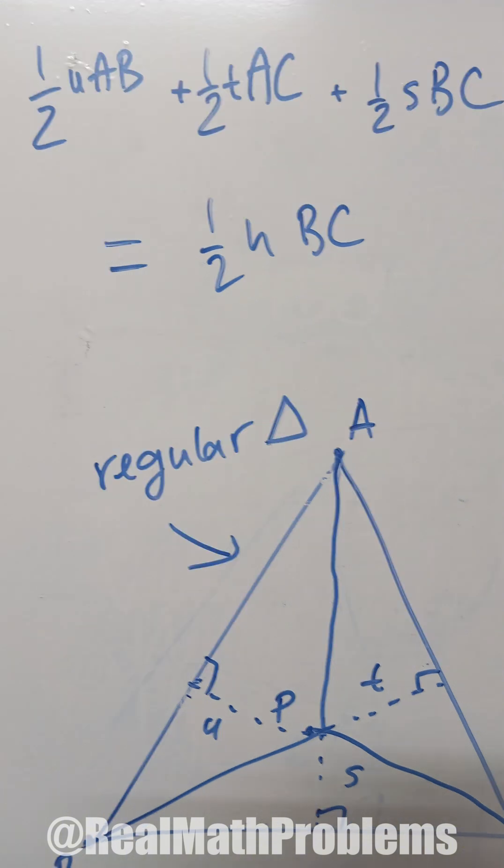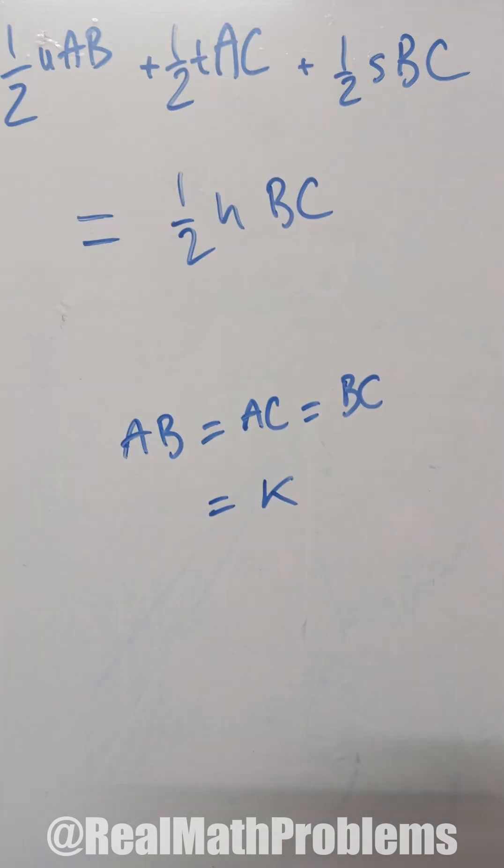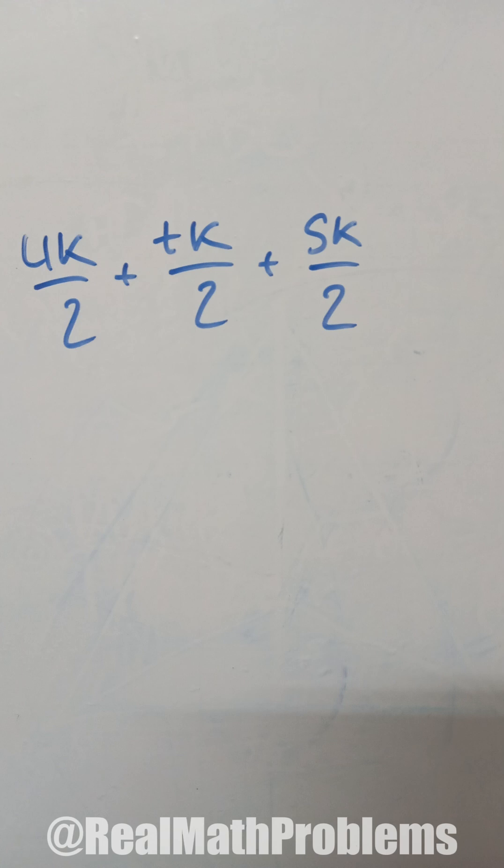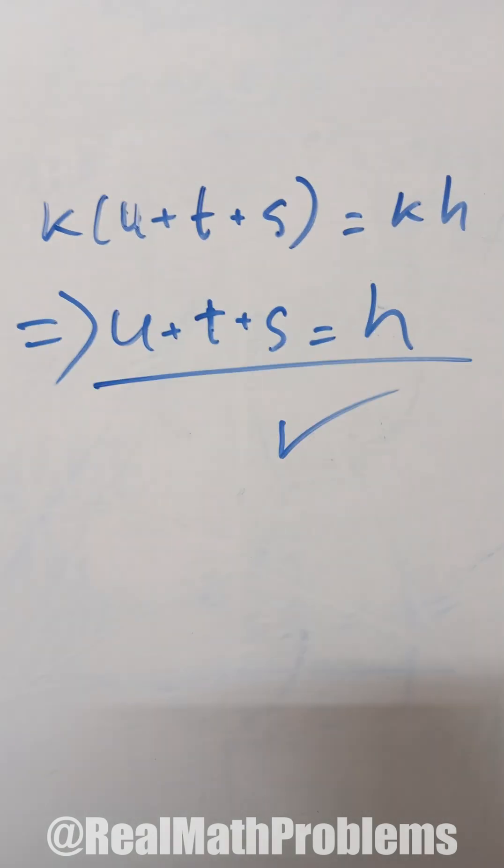But remember, you are working with a regular triangle, so AB equals AC equals BC, or equals a K variable, which leads you to U times K over 2, plus T times K over 2, plus S times K over 2, equals H times K over 2. You can easily figure out the final demonstration.